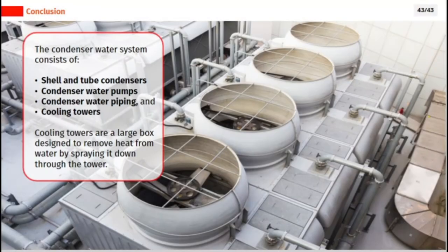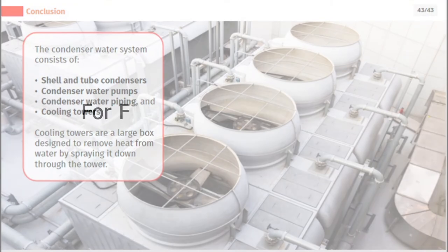The condenser water system consists of shell and tube condensers, condenser water pumps, piping, and cooling towers. Cooling towers are a large box designed to remove heat from water by spraying it down through the tower.